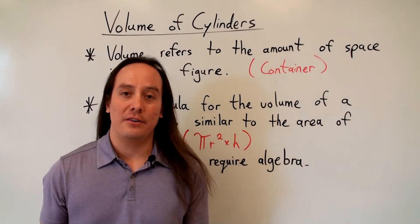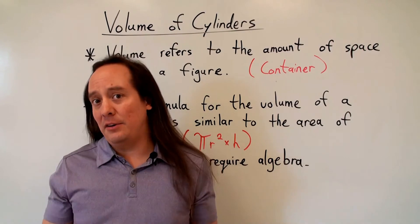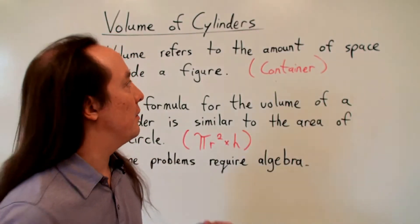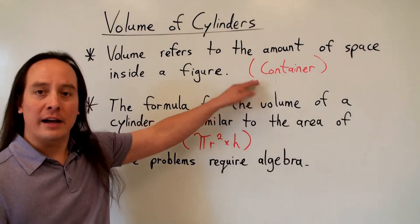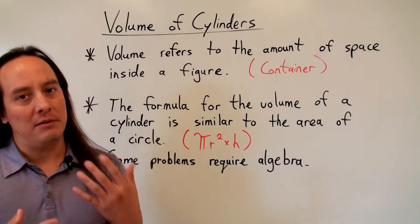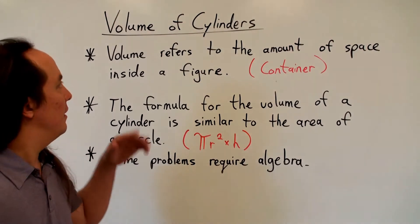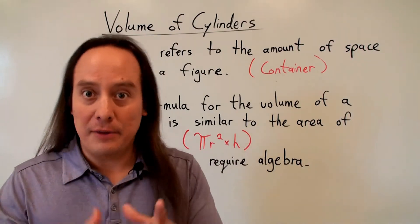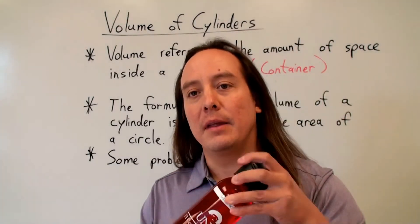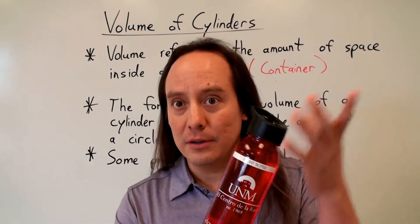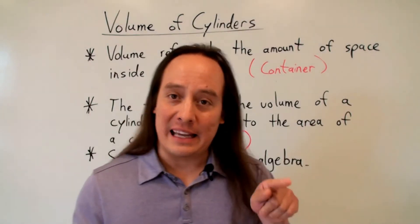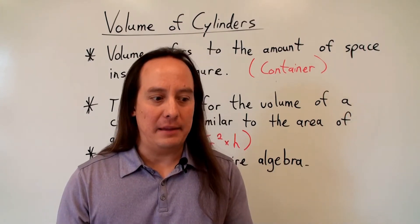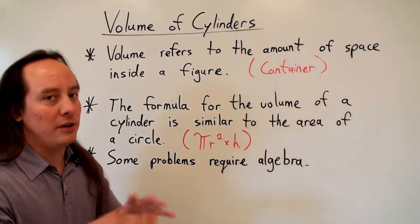Now we're going to start looking at the volume of cylinders. The volume of cylinders is similar to all other volume problems. When we're talking about volume, we're talking about a container — the space within something. Volume refers to the amount of space inside a figure. In this case, we're talking about a cylinder, which kind of looks like my water bottle. It can hold something inside of it, so we know we're talking about a three-dimensional figure.